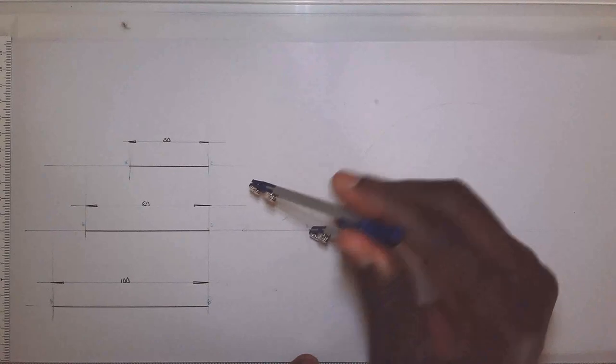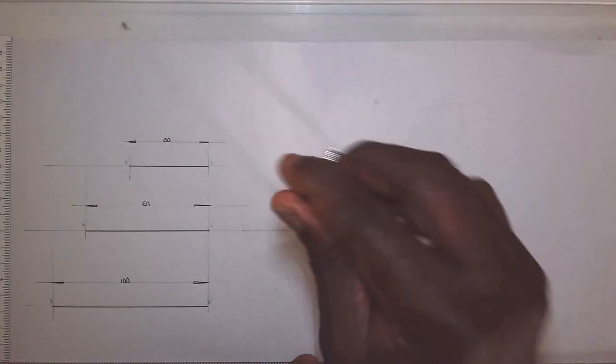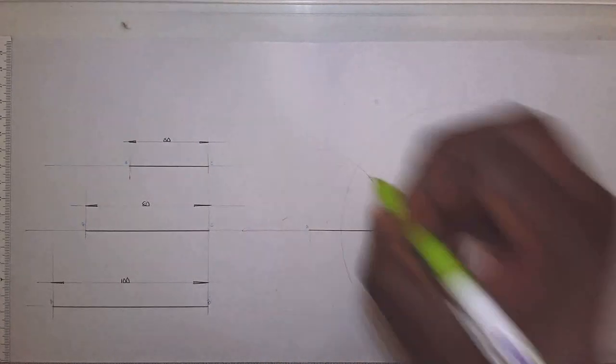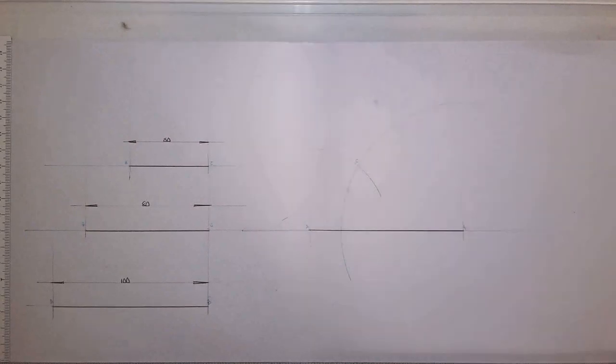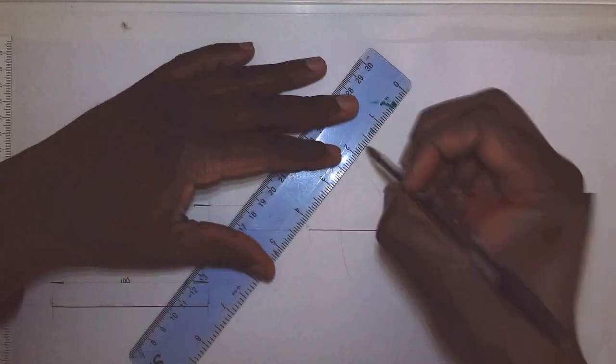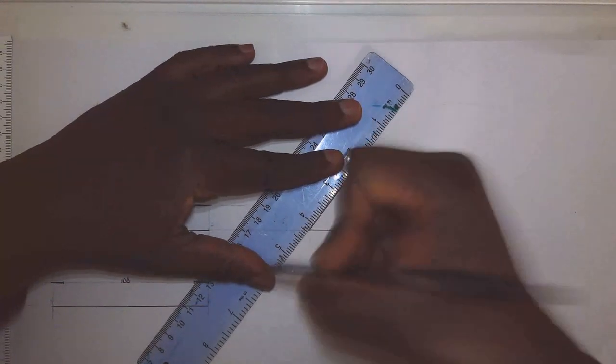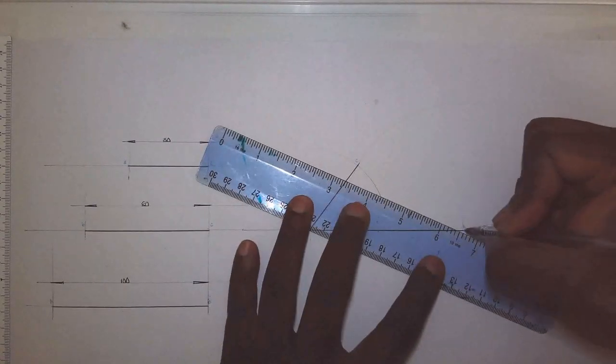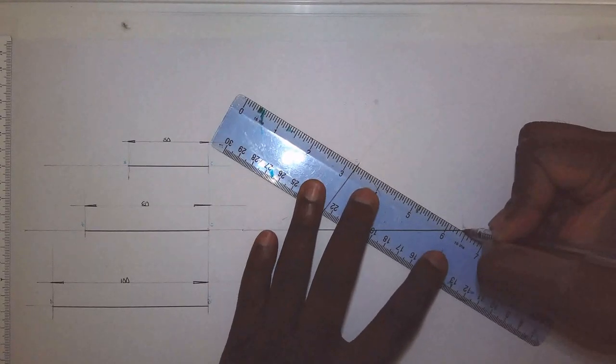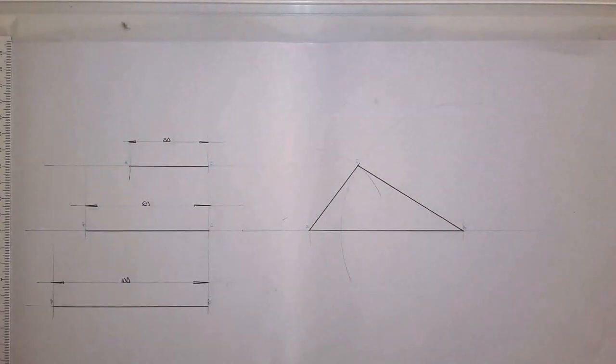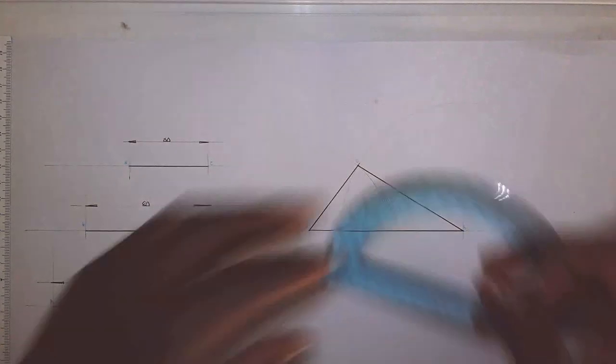Where the two arcs intersect, that will give us our point C. And all I have to do now is just join and connect the triangle, so C to A and then BC like so. Easy peasy.